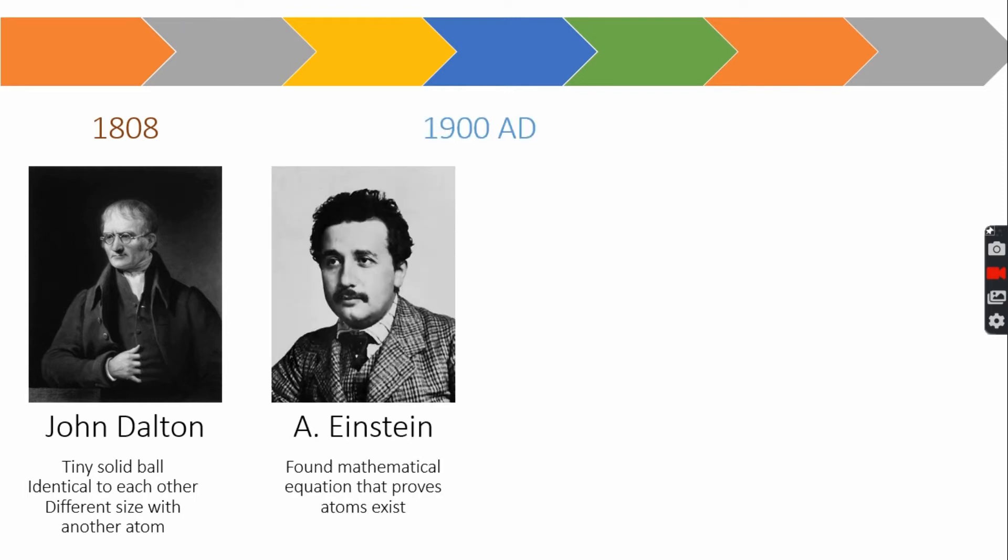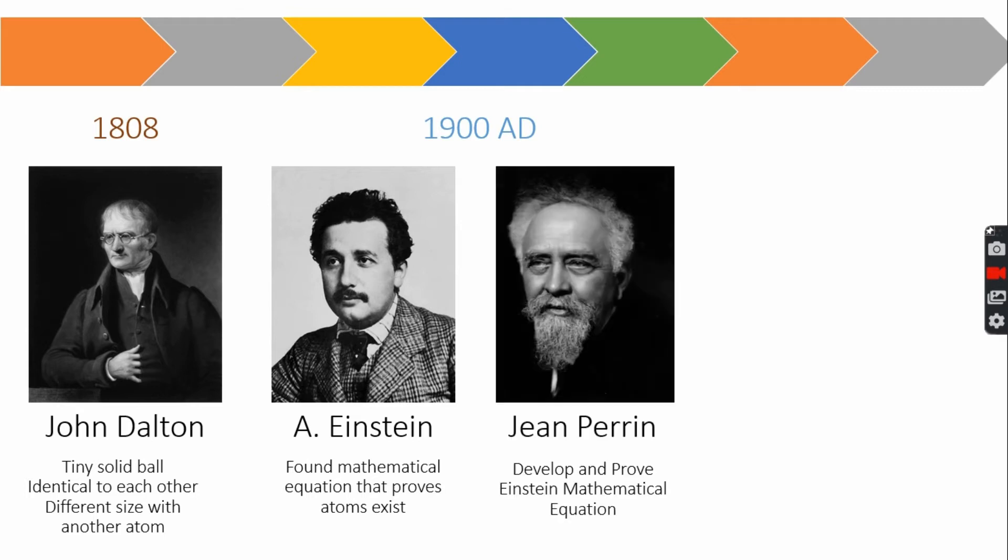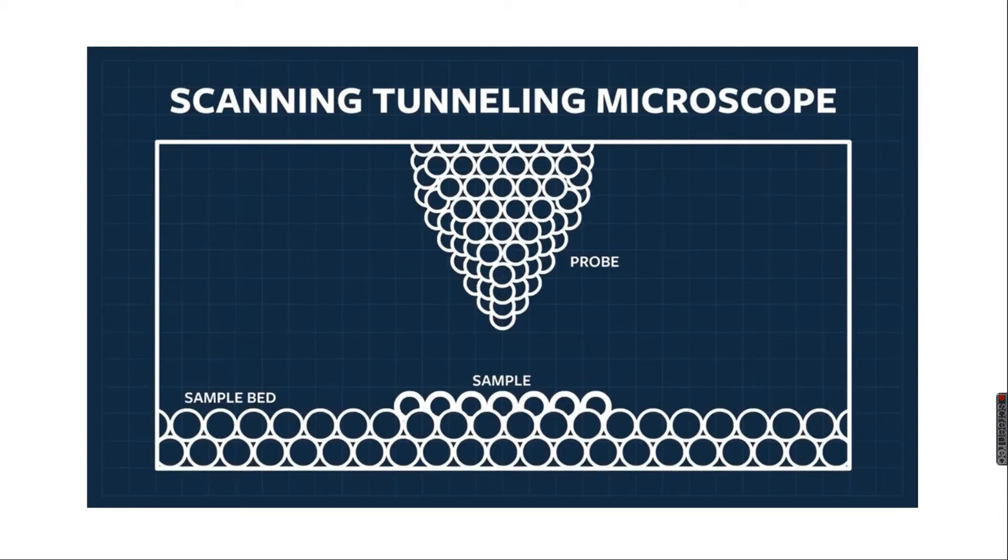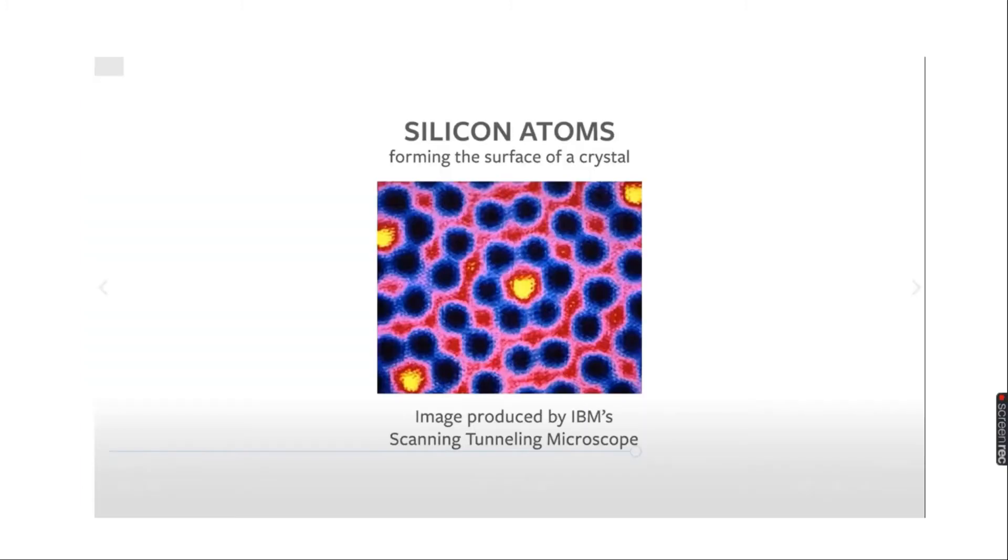Einstein then found mathematical equation that proves not only that atom exists, but also calculate the mass of it. Not long from that, Jean Perrin developed and proved Einstein's mathematical equation. Even in the 70s, Heinrich Rohrer and Gerd Binnig led the invention of scanning tunneling microscope. They can scan grain of atoms. Here is the model of the scanning tunneling microscope. It uses electron tunneling to scan an atom that is fixed onto the surface. And this is an actual image from the scanning tunneling microscope, showing the actual pattern of silicon atoms arranged in the sample.